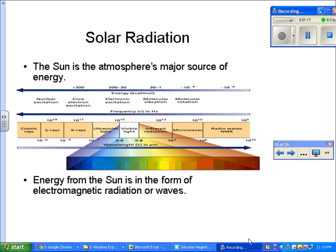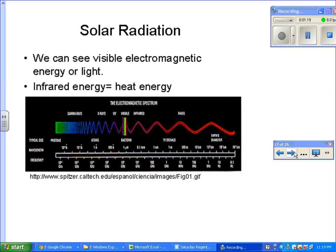Then you have microwaves and radio waves. But the key thing to understand: we can see visible electromagnetic energy or light, plus infrared energy, which is heat energy. The wavelength of heat energy or infrared is longer than visible light.